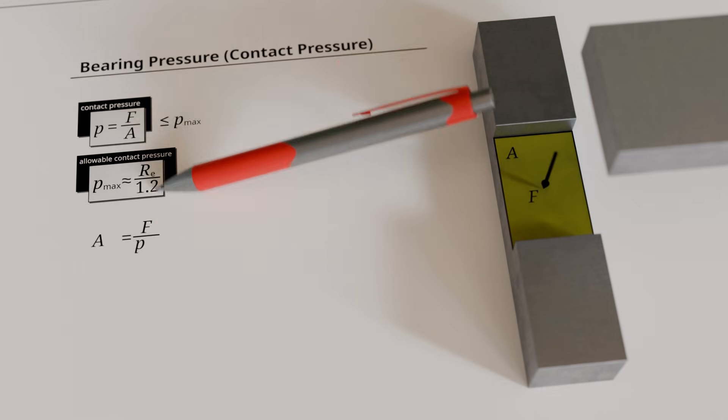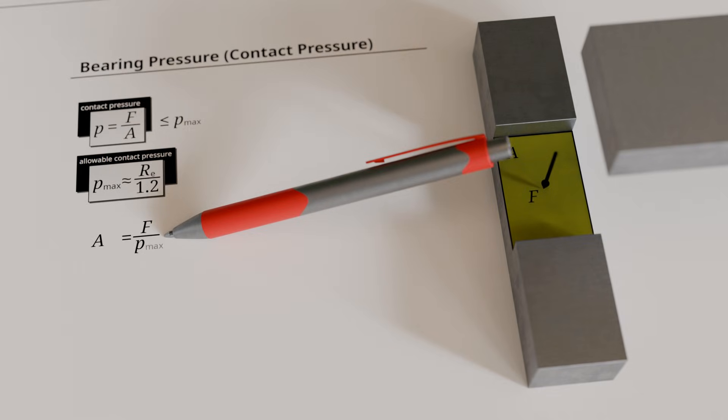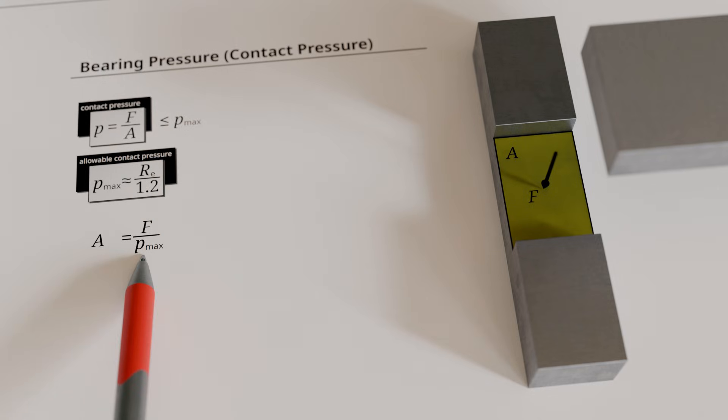After rearranging the bearing pressure formula, the given external force and the maximum permissible bearing pressure can be used to determine the minimum required contact area for dimensioning the component.